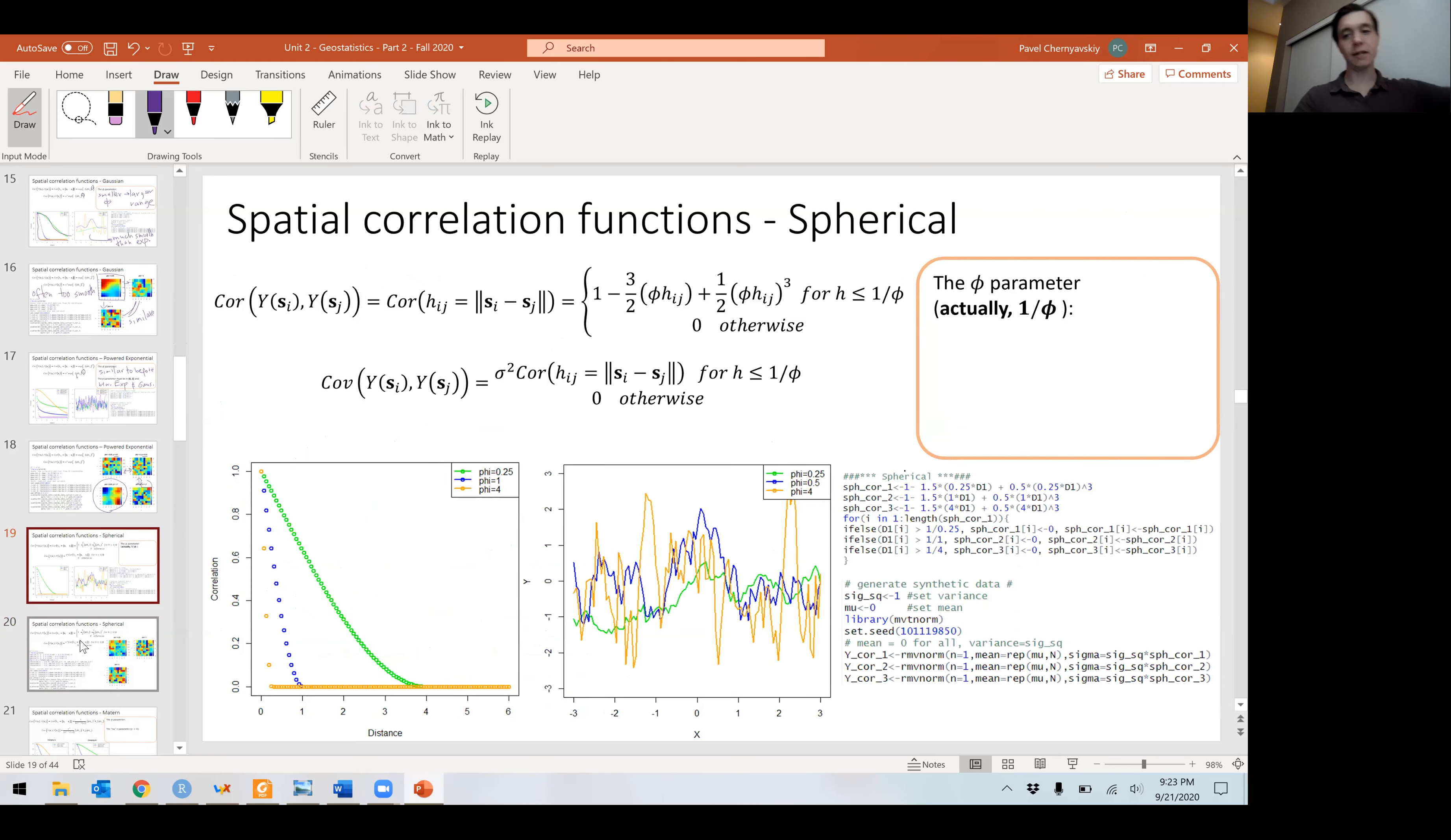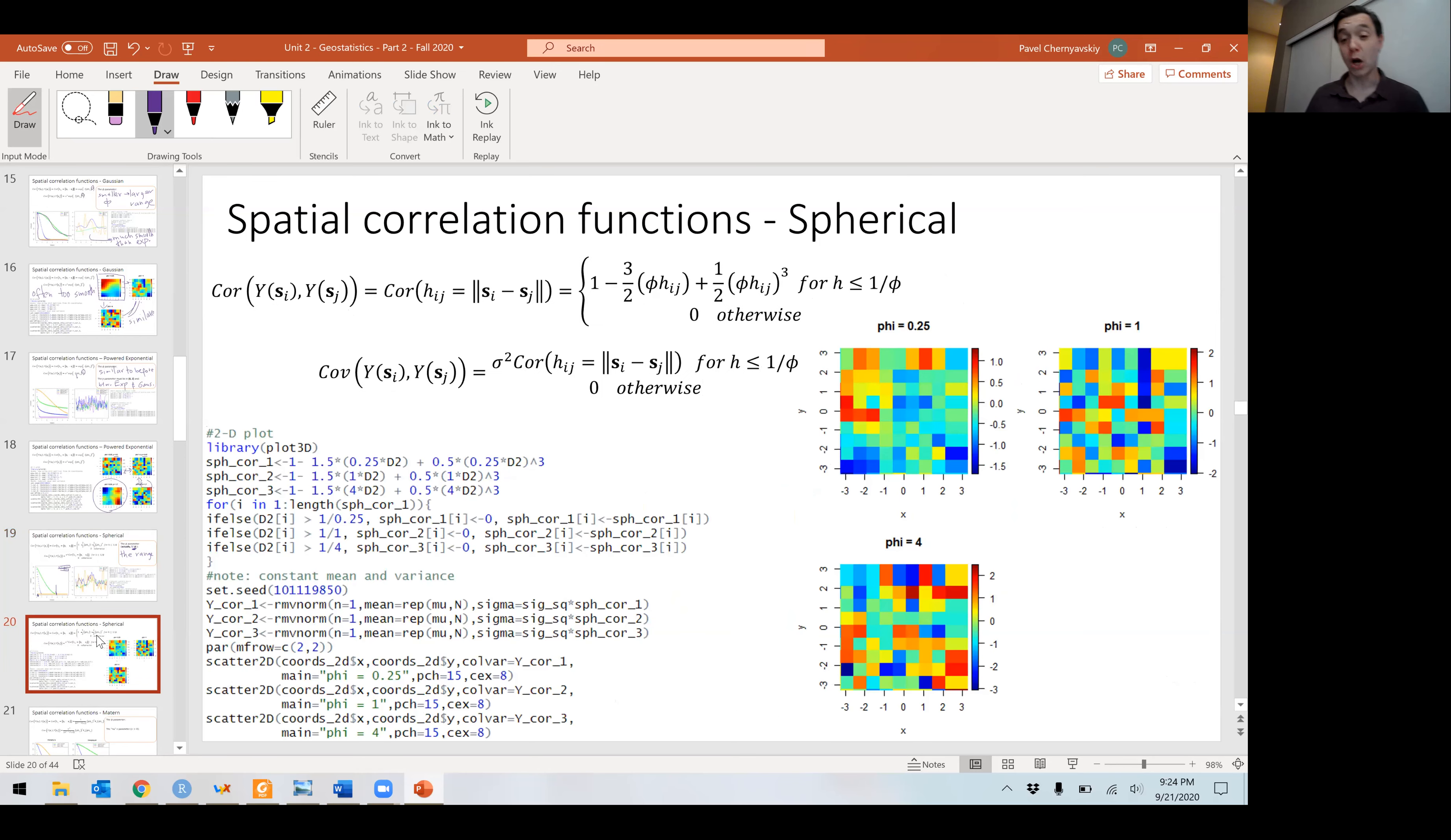Spherical. Well, spherical is maybe one that should be a favorite. It's not used very often, but more often than either the Gaussian or the power exponential. One over phi is actually the range. If you're using the spherical correlation function, you estimate phi. One over phi will actually be the range. Look, when in the green line, phi is 0.25, one over phi is four. That is exactly where that line hits zero, where that correlation hits zero. The orange line, phi is four. I can tell you where that line hits exactly zero is 0.25. When phi is one, where that correlation line hits zero is exactly one. That is maybe a reason to use the spherical correlation function. It appears in almost every single R package for spatial statistics.